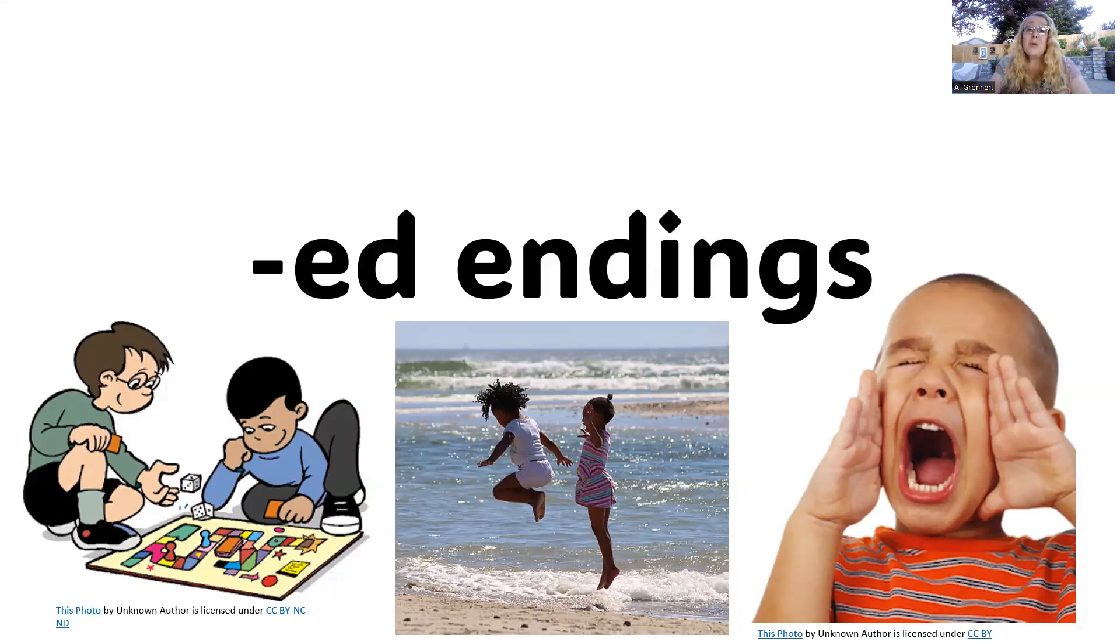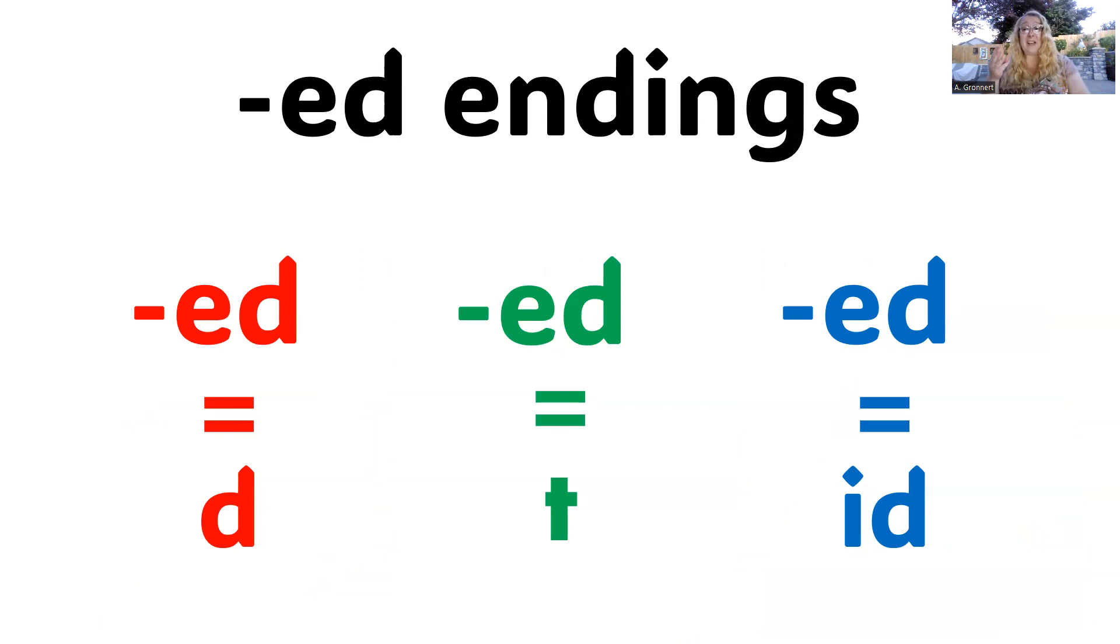Did you know that ed can have three different sounds when it's at the end of a word? It can. Sometimes ed sounds like d, other times it sounds like t, and then it can also sound like id. Let's find out why.